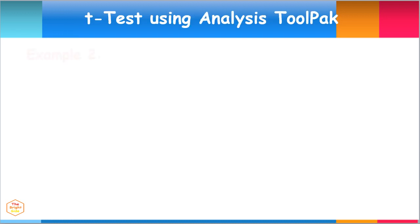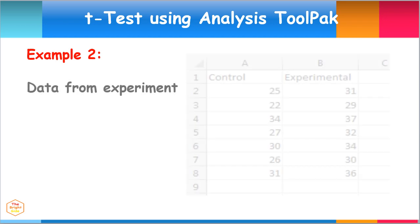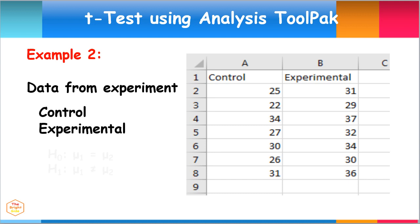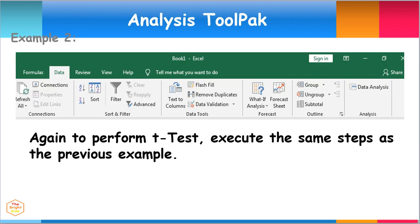Let's have another example. In this case, we will use the data from the results of measurements of the control setup and experimental setup. The null hypothesis here states that the means of both are equal, while the alternate hypothesis says that they are not equal. Again, to perform the T-Test, execute the same steps as the previous example.